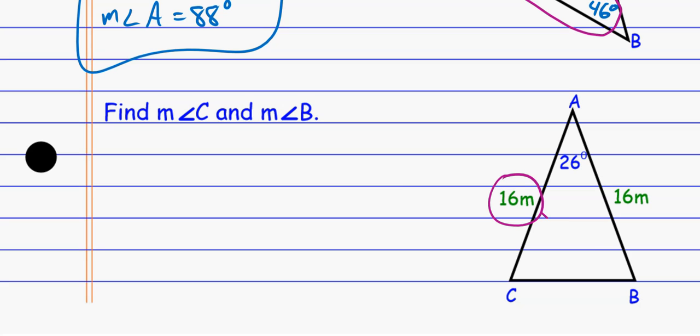are going to have to be the same because they're across from a side that's the same. So here, this side is 16 and it's across from angle B. This side's also 16 across from angle C. So angles B and C have to be the same. They have to be the same measurement.